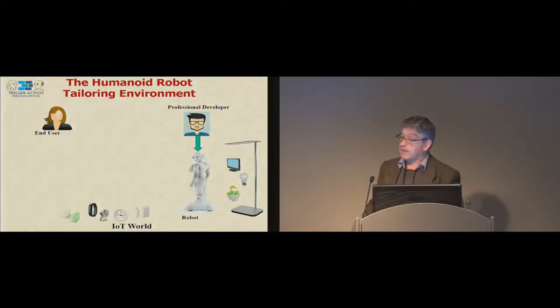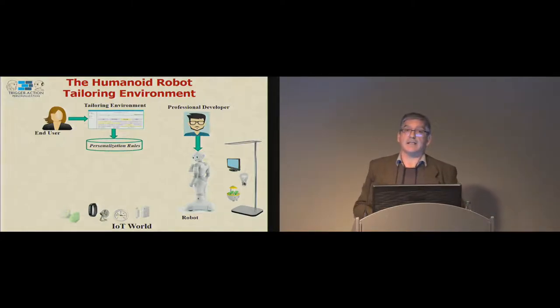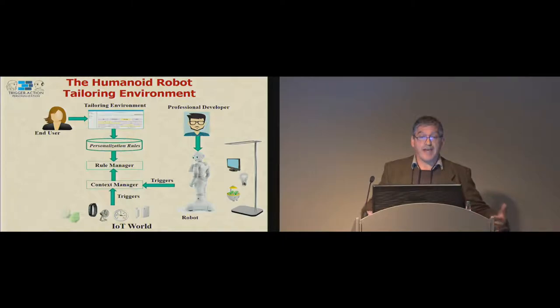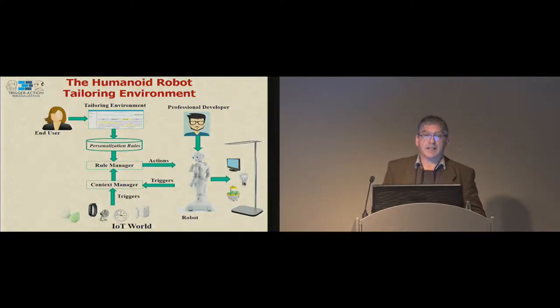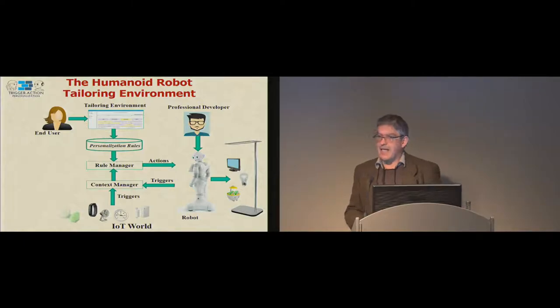We have such humanoid robots, we have a lot of sensors, smart objects, and so on. We already have some software that developers have created and made available for controlling the behavior of the robot. Then arrives the end users. End users have specific needs. They want to change something. We provide this tailoring environment where they can indicate the specific personalization rules. Such rules are sent to a role manager which subscribes to a middleware, we call it a context manager, that is able to receive the events from the robot in the surrounding environment.